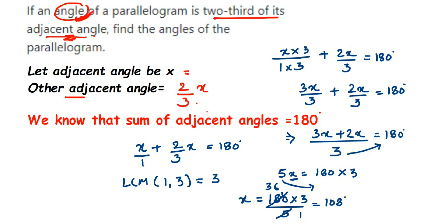So the first adjacent angle is 108 degrees. The other angle, which is two-thirds of x, can be found by substituting or simply doing 180 minus 108, which gives 72 degrees. So the two angles are 108 degrees and 72 degrees. I hope this question is clear — if you have any doubts, drop a comment. Thank you for watching.